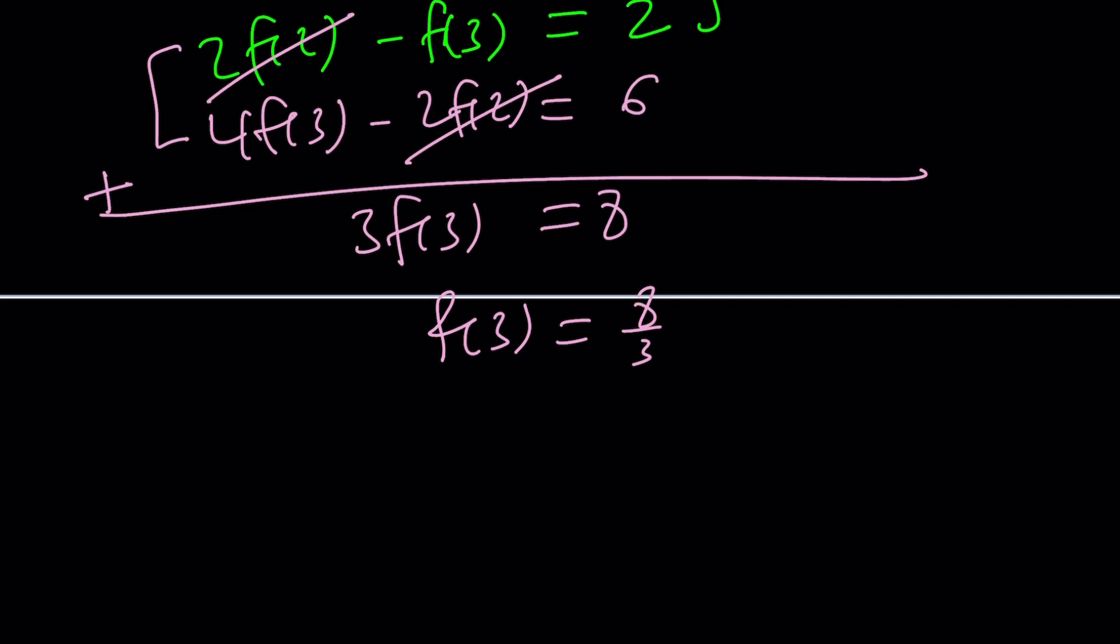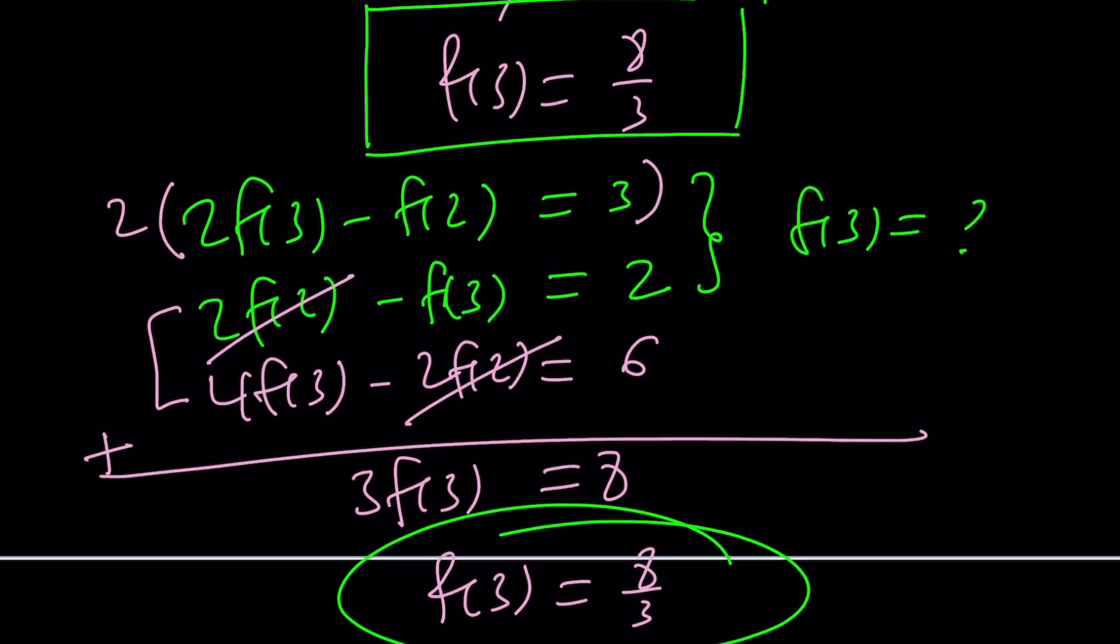3f of 3 equals 8. And we're going to get the result more directly. I think elimination is a better choice here in my opinion. But I could be wrong. Let me know which method you like better. Is there another way to do it? I don't think so. But similarly, we could find f of 2. So let's go ahead and talk about the setup of this problem.